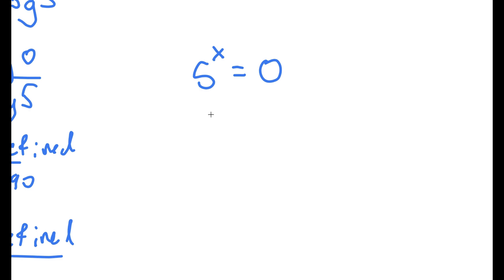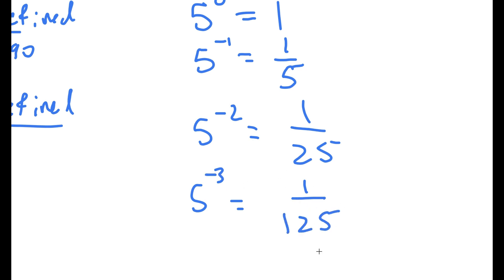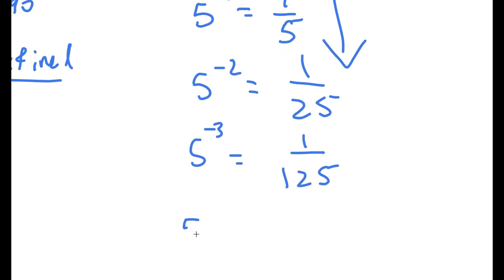Another way to prove this: our equation was 5 to the power of x equals 0. Well, 5 to the power of 0 equals 1; 5 to the power of negative 1 equals 1 over 5; 5 to the power of negative 2 equals 1 over 25; 5 to the power of negative 3 equals 1 over 125. As the exponent decreases, the number decreases, but it's never actually going to approach 0. No matter how low the exponent — even 5 to the power of negative 1 trillion — it's never actually going to be 0.